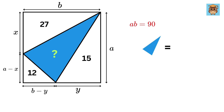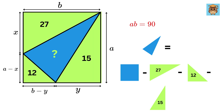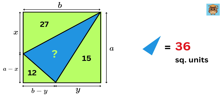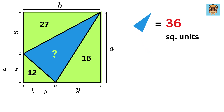The area of the blue region is the area of the rectangle minus the areas of all three triangles. So the area equals 90 minus 27 minus 15 minus 12, which is simply 36 square units. Even with three equations and four unknowns, we were able to solve it!